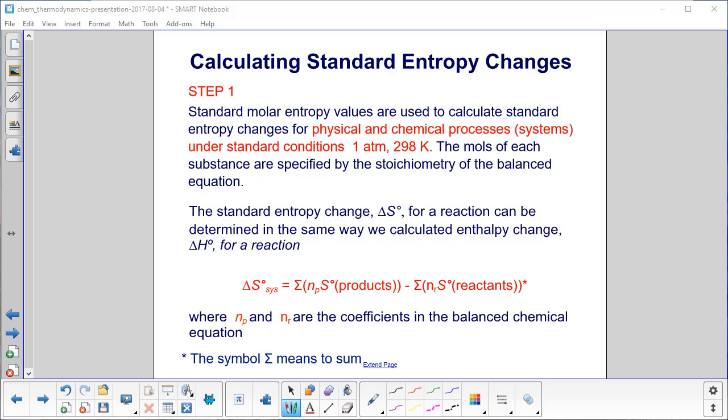We laid out the high-level process, now we're going to get to the work. Step 1: Standard molar entropy values are used to calculate standard entropy changes for physical and chemical processes under standard conditions—1 atmosphere, 298 Kelvin. The moles of each substance are specified by the stoichiometry. See how we're putting together everything we've been learning?